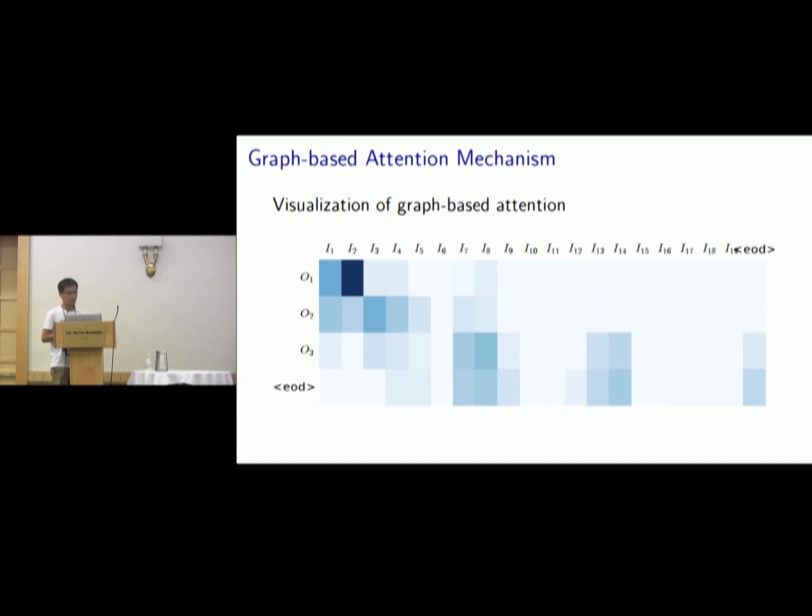Here is a visualization example. We can see that our graph-based attention is more focused on some important sentences and ignores the less important ones.